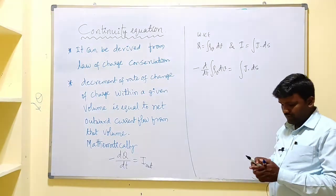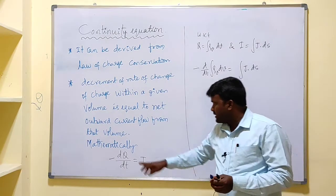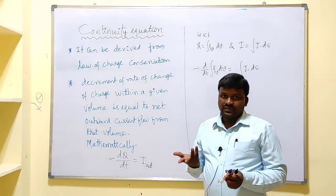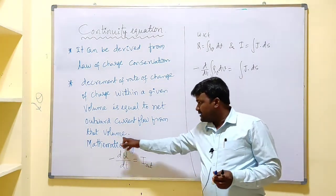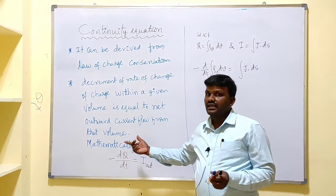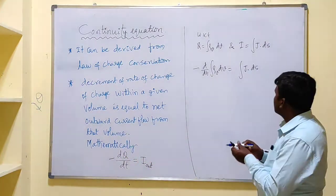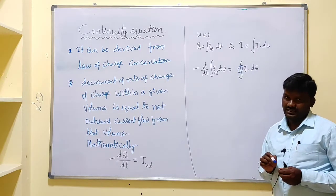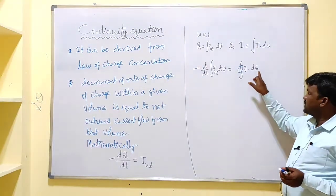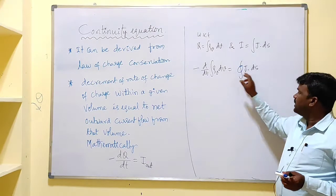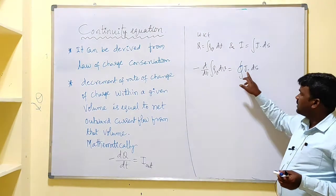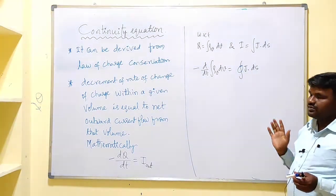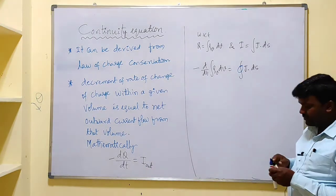Here we need to note that the current flows from the volume, and a closed surface defines the volume. Since we have a volume, we indirectly have a closed surface. That is why we need to take a closed surface integral on the right-hand side. A closed surface defines an open volume, so since we have a volume integral on the left-hand side, we must have a closed surface integral on the right.